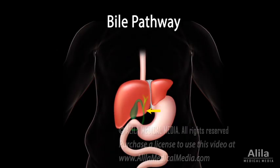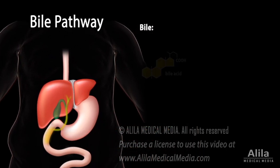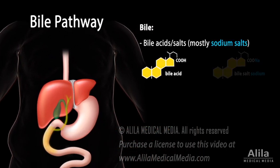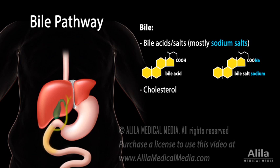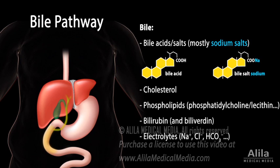Bile is a yellowish-green fluid secreted by the liver. Bile contains bile acids or bile salts, cholesterol, phospholipids, bilirubin, electrolytes, and water.